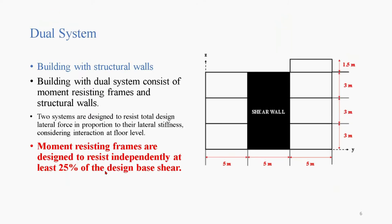In order to satisfy the dual system requirement of a building, it should be ensured that about 25 percent of the total base shear is independently taken up by the moment resisting frame, and the shear wall should take at least 75 percent or maybe less than that. We will be seeing how to satisfy this requirement shortly.